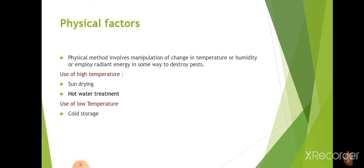Artificial physical factors involve manipulation of temperature or humidity. Use of high temperature includes sun drying, with the most famous example being sun drying of seeds, as well as hot water treatment. Use of low temperature includes cold storage — for example, cold storage of potatoes to prevent various tuber moths.